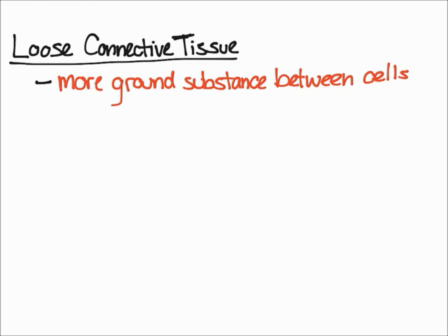Loose connective tissue is actually broken down into two different connective tissue categories that we're going to talk about. But first, let's get a background on loose connective tissue. Loose connective tissue is pretty much just a fibrous connective tissue that has more ground substance between the cells.